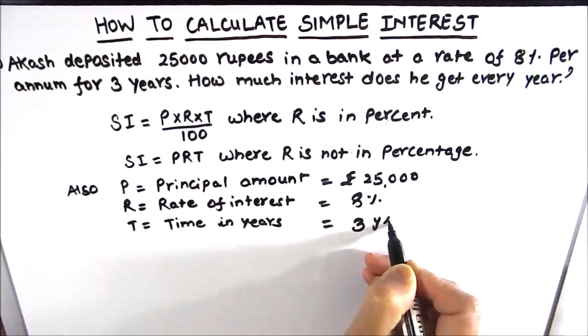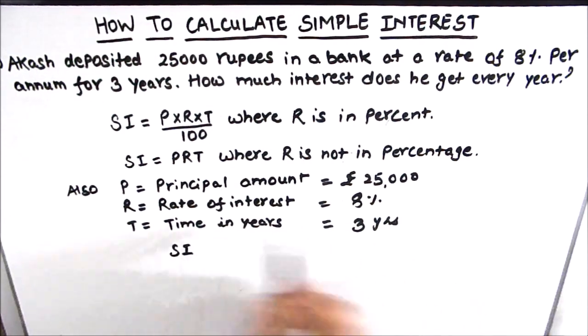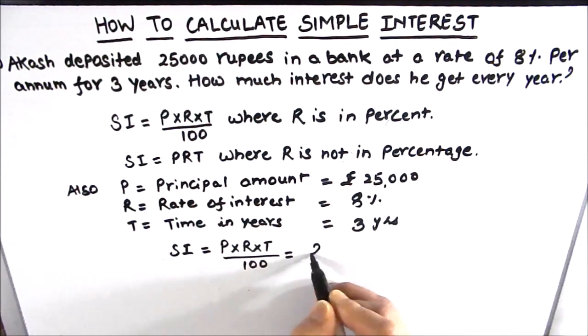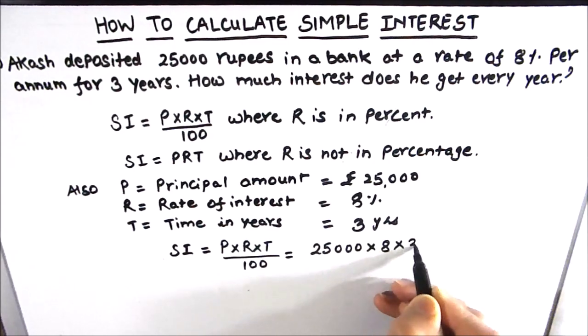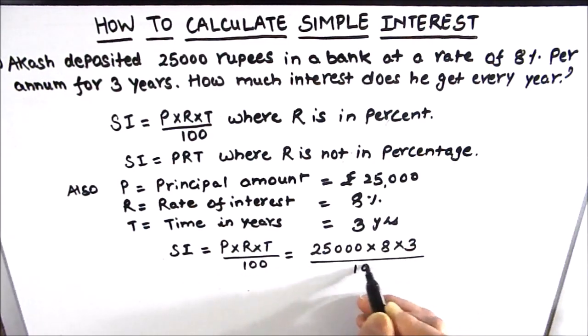So let us substitute these values in the formula. We will be using the first formula because the rate is given in percent, which is 8%. So P times R times T divided by 100, which is equal to 25,000 times 8 times 3 divided by 100.